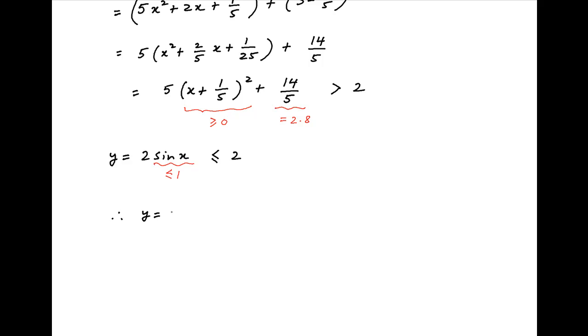Therefore to summarize, the curve y equals 5x squared plus 2x plus 3 is always strictly greater than 2, and the curve y equals 2 sin x is always less than or equal to 2. Therefore the two curves will never intersect.